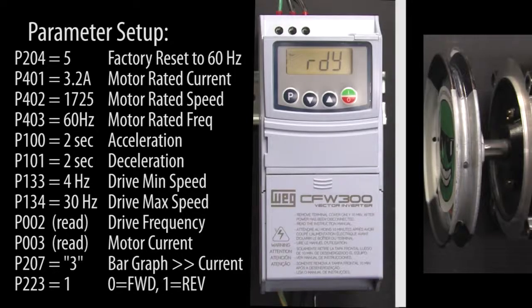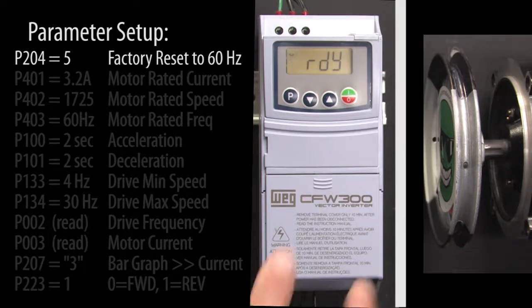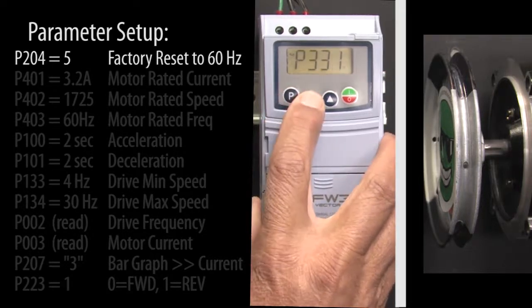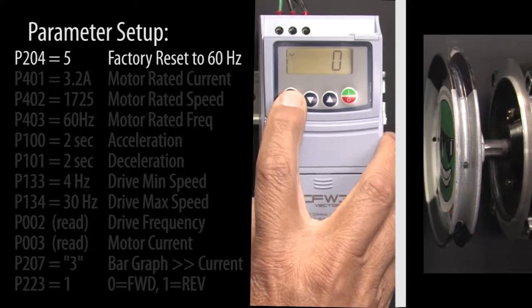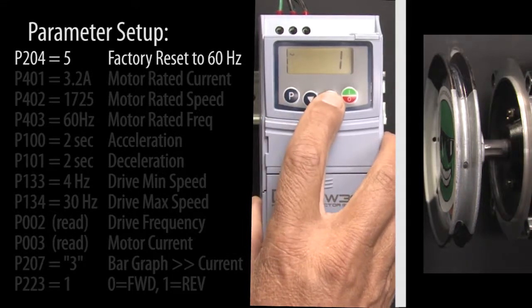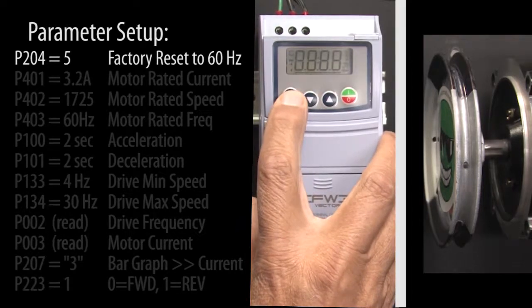Before doing anything, let's reset the drive to factory default so if you're following along we're both starting at the exact same place. Press the P button to get to the parameters and scroll to parameter 204. Hit P again so we can change the parameter to a 5 which resets the drive's parameters to factory default for 60 Hz and press P to accept that.